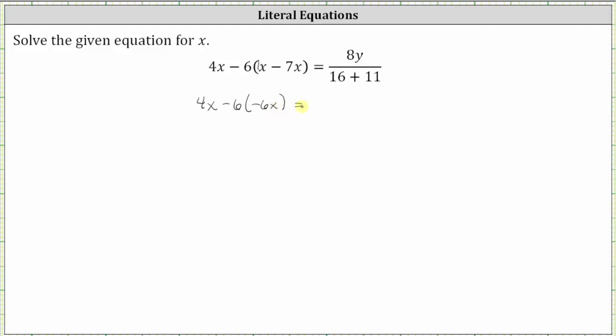Equals, on the right, we determine the sum in the denominator. 16 plus 11 is 27, giving us eight y divided by 27.